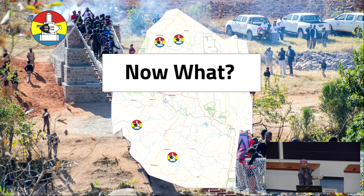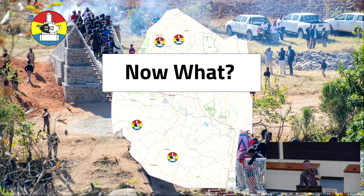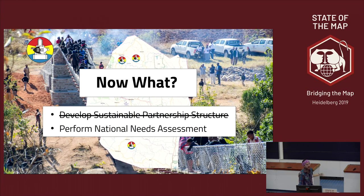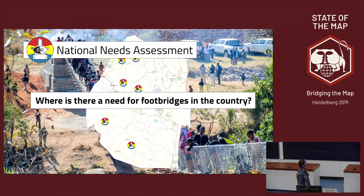We've started these programs and want to build footbridges to provide access across the entire country, but the way we were going wasn't sustainable or scalable. So we decided to scale up our efforts and change our approach to really solve this problem for the whole country. To do that we want to develop a partnership structure and perform a national needs assessment — I'm going to focus on the national needs assessment because it's really relevant to OpenStreetMap.